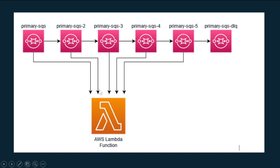That dead letter queue is again listened to by the same Lambda function, which works the same as before — it tries to process the message, deletes it on success, or throws an error on failure. The message then moves to primary SQS 3, where I have set a visibility timeout of 60 seconds, so the message moves to SQS 3 after one minute.